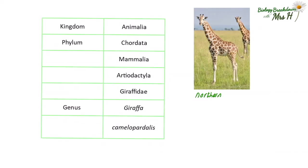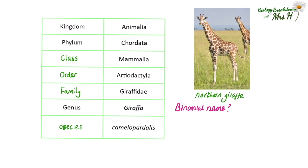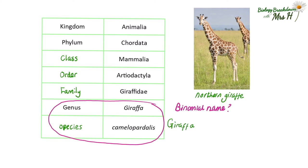Here's another question, this time on the northern giraffe. Fill in the left-hand side first: kingdom, phylum, class, order, family, genus, species. Use the table to find its binomial name — it's Giraffa camelopardalis. We can also add the domain: since giraffes have eukaryotic cells, they belong to the domain Eukaryota.